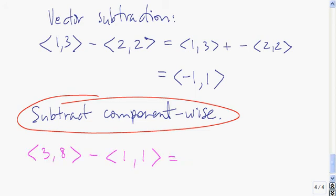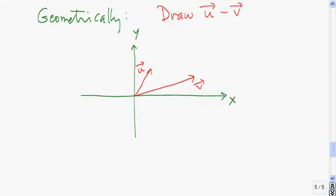As another quick example, the vector minus the vector is the vector whose x component is 3 minus 1 and y component is 8 minus 1. Now let's look at the geometric representation of the vector u minus v. Here we have vector u and vector v. Geometrically, the vector u minus v is the vector we get by going from the tip of v — that's its tail — to the tip of u, which is its head.